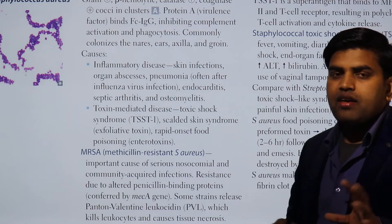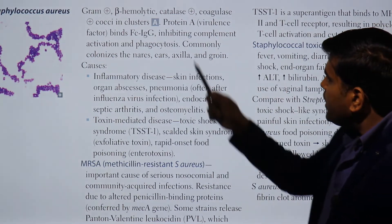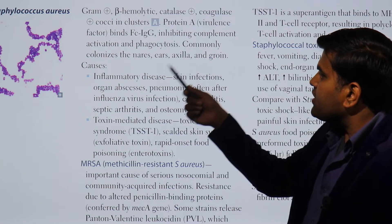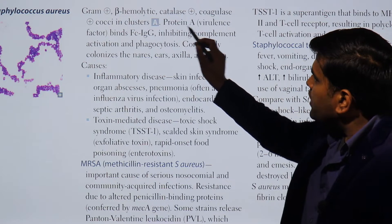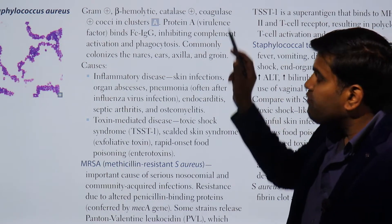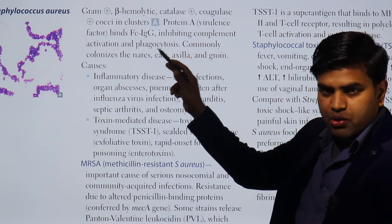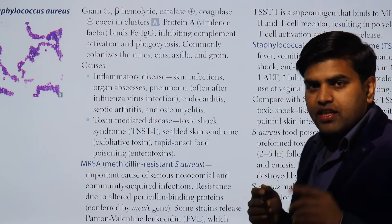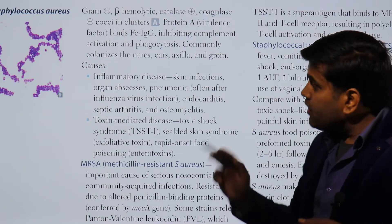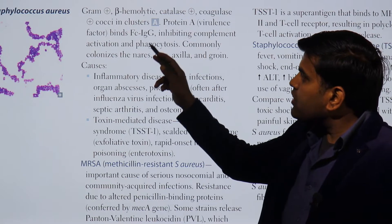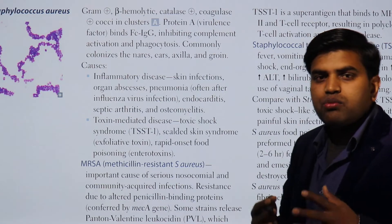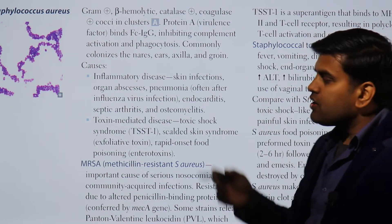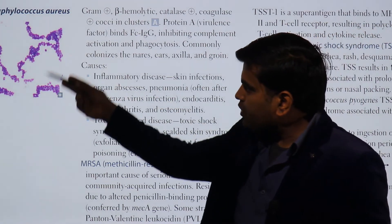Key virulence factor of S. aureus: Protein A binds with the Fc region of immunoglobulin G, inhibiting complement activation and phagocytosis. S. aureus commonly colonizes the nares, ear, axilla, and groin. Protein A acts as a virulence factor because it binds to the Fc portion of IgG, which normally helps activate the complement pathway and increase opsonization. By inhibiting this, S. aureus evades your immune system, making it easier to cause infection.